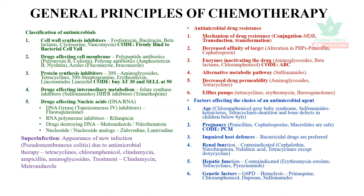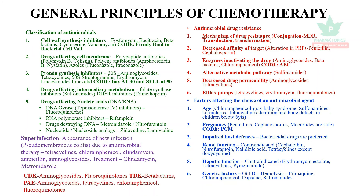Superinfection is a short note — it is the appearance of a new infection. The most common form is pseudomembranous colitis. Broad-spectrum antibiotics that cause it include Tetracyclines, Clindamycin, Ampicillin, and Aminoglycosides. Treatment is with Clindamycin, Metronidazole, or Vancomycin.